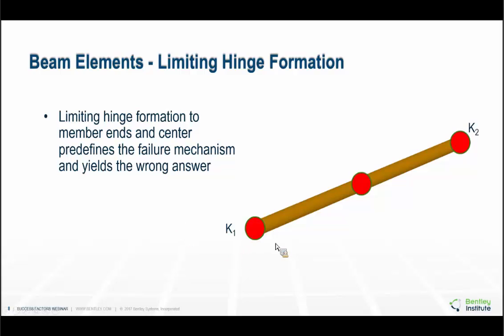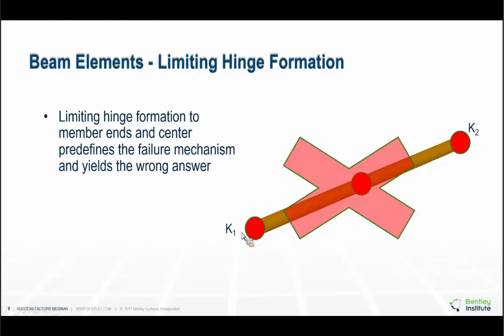Limiting hinge positions is going to yield the wrong answers because, depending on the stiffness at either end, the hinges can form at other locations. The actual plasticity spreads across the member and is not located at discrete points. Any software that treats the structure with three hinges located at the ends and the center is basically going to give you an approximate answer.